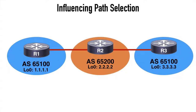Let's now look at the allow AS-in option. We have a topology with three routers: R1 and R3 both in Autonomous System 65100, and R2 in 65200. R1 and R3 are from the same customer but in two different locations, using the same autonomous system number. A BGP loop prevention mechanism checks incoming prefixes and ensures they're not originating from the same AS as the local router. So prefixes advertised from R3 won't appear on R1. We can override that with the allow AS-in command.